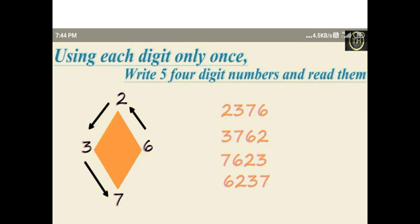Next arrangement: three, seven, six, two. Thousand place, hundred place, tens place, and unit place. Read this number: three thousand seven hundred and sixty two.